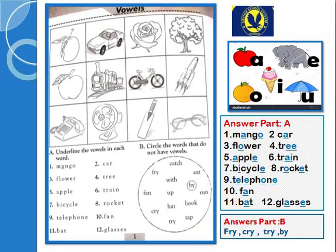We will read in pictures. What is our picture? Mango. Next, car. Third, flower. Fourth, tree. Next, apple. Train. Cycle. Rocket. Telephone. Fan. Bed. Glasses.